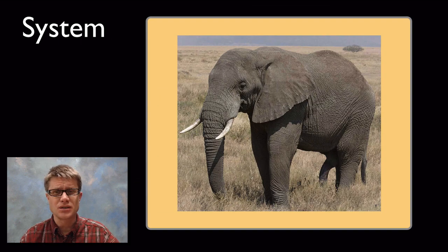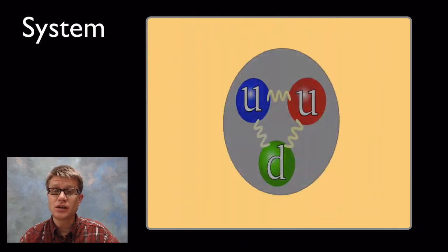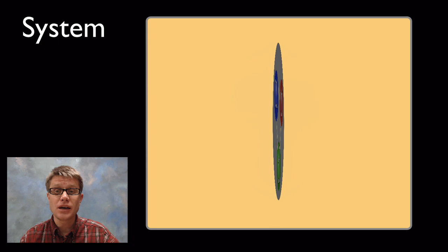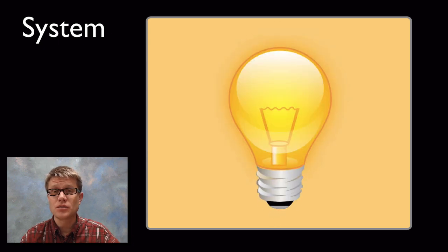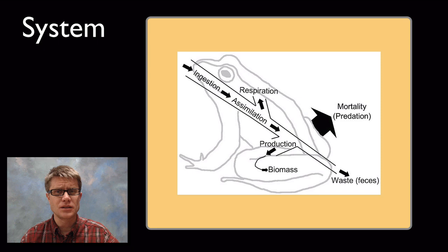And so what could be a system? An elephant is a system, so is a galaxy, so is a machine, so is a fundamental particle, so is an idea. Basically if you have a system like this, this is a system that is going to show us how a frog eats.